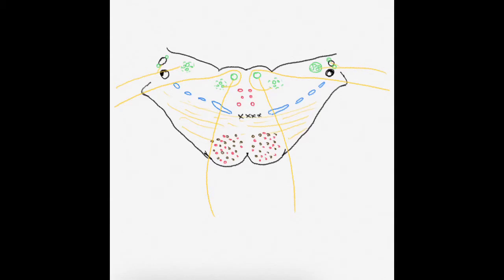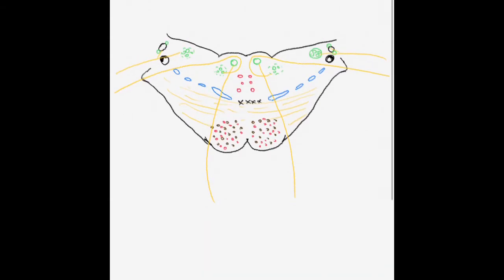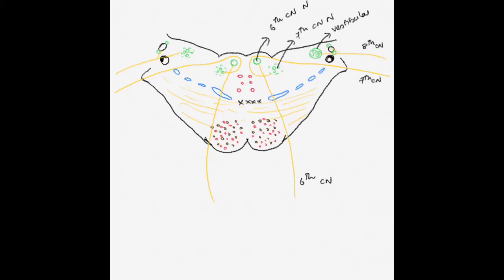Three other important structures I am drawing in red are the medial longitudinal fasciculus, the tectospinal tract, and the reticulospinal tract. Now I will label the structures: the sixth cranial nerve and the sixth cranial nerve nucleus, the seventh cranial nerve nucleus and seventh cranial nerve. The medial lemniscus carries the dorsal column fibers, followed by the trigeminal lemniscus, the spinal lemniscus, and the lateral lemniscus — labeled on both left and right sides.